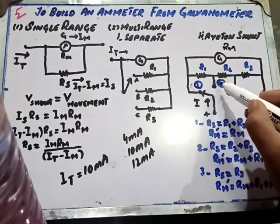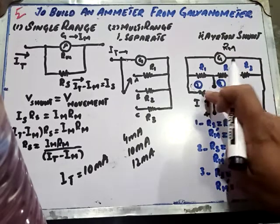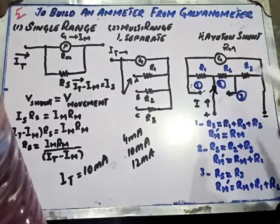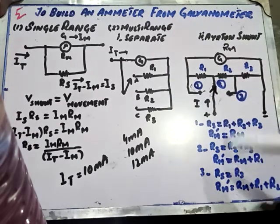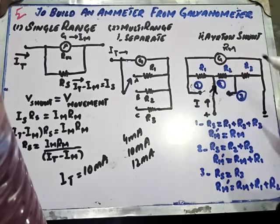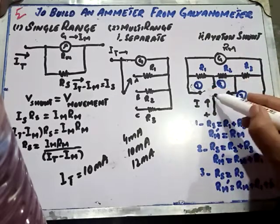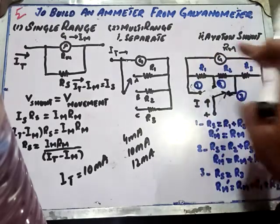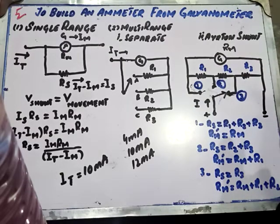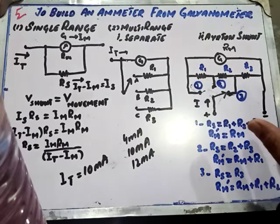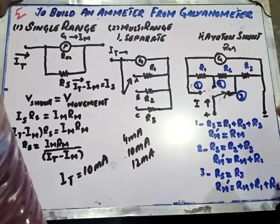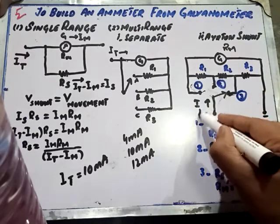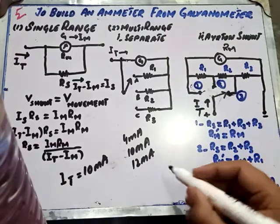For range 2, the effective galvanometer resistance RM' = RM + R1, and Rs = R2 + R3. For range 3, RM' = RM + R1 + R2, and Rs = R3. Keeping these relationships in mind, you can derive expressions for IT at each range. For the Ayrton shunt, you are required to design for 5 mA, 10 mA, and 15 mA.